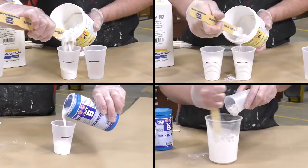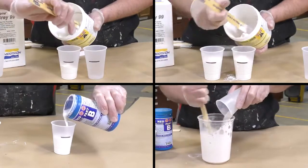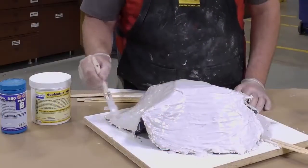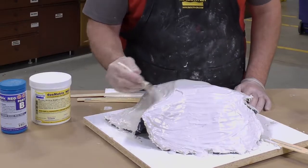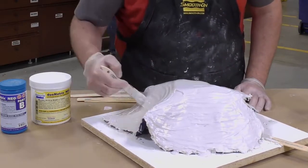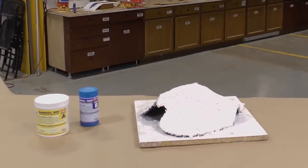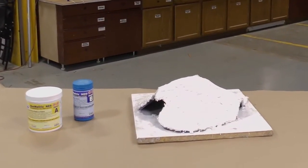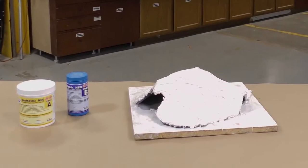A third and final layer of the Duo Matrix Neo is now dispensed and mixed without any additives. This final layer will help encapsulate any of the glass fibers that may stick out from the second layer. Our casting is now allowed a full cure of 60 minutes before demolding.